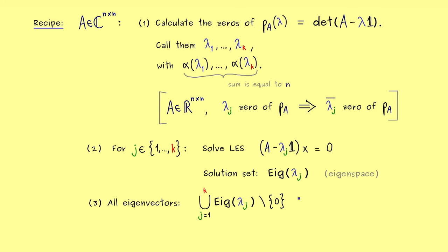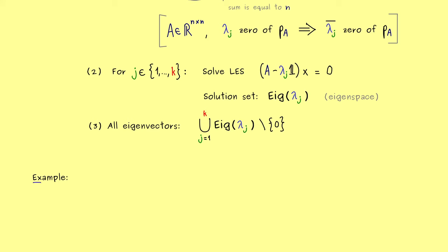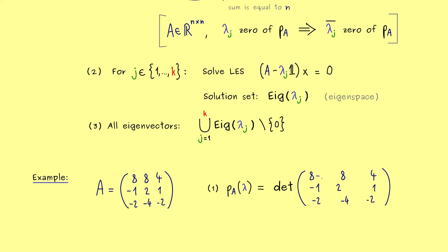The best way to remember the recipe is to look at an example. We consider a matrix and go through the steps. I want an example that is not too simple and not too complicated, so I take a three-by-three matrix with only real numbers inside. However, it could still mean that the eigenvalues are complex-valued — we will see that immediately in step one when we calculate the zeros of the characteristic polynomial. First we have to calculate P_A, so we have to calculate a determinant, remembering that the matrix is the same as A but with minus lambda on the diagonal.